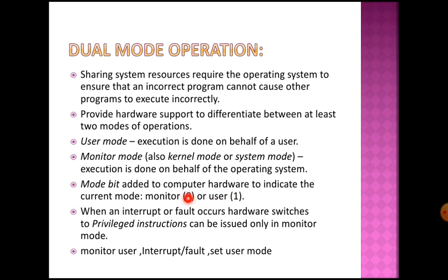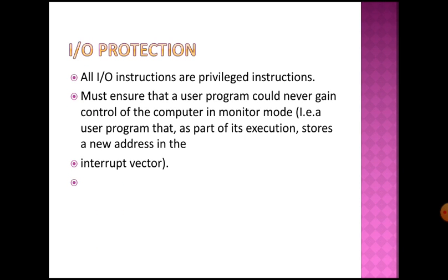When a user tries to execute a privileged instruction or access a memory region that doesn't belong to it, the mode bit goes to zero and control passes to the operating system. That is how dual mode operation works. Now, regarding the protection of input-output devices: all I/O instructions are privileged instructions, meaning only the operating system can execute them.